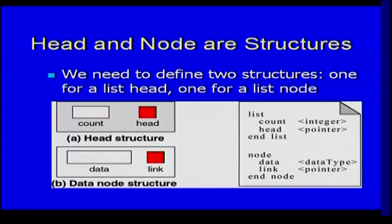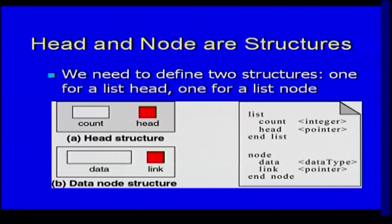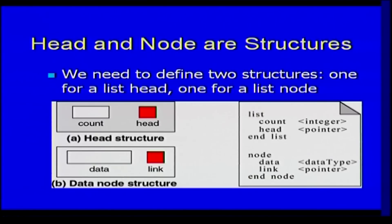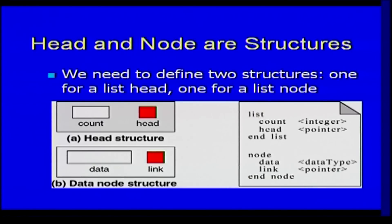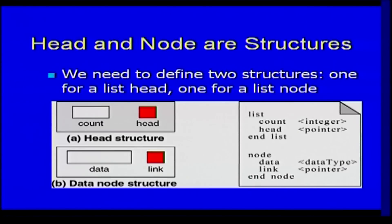The head structure need not be represented separately — there are other implementations that do not use a separate structure for the head node — but we are assuming we use a separate structure. The head structure consists of the count of the number of elements in the list and a pointer to the first node. The node structure consists of data and a pointer to the next element in the list.